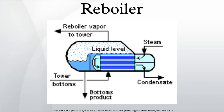Kettle Reboilers: Kettle reboilers are very simple and reliable. They may require pumping of the column bottom's liquid into the kettle, or there may be sufficient liquid head to deliver the liquid into the reboiler. In this reboiler type, steam flows through the tube bundle and exits as condensate. The liquid from the bottom of the tower, commonly called the bottoms, flows through the shell side. There is a retaining wall or overflow weir separating the tube bundle from the reboiler section where the residual reboiled liquid is withdrawn, so that the tube bundle is kept covered with liquid and to reduce the amount of low-boiling compounds in the bottoms product.